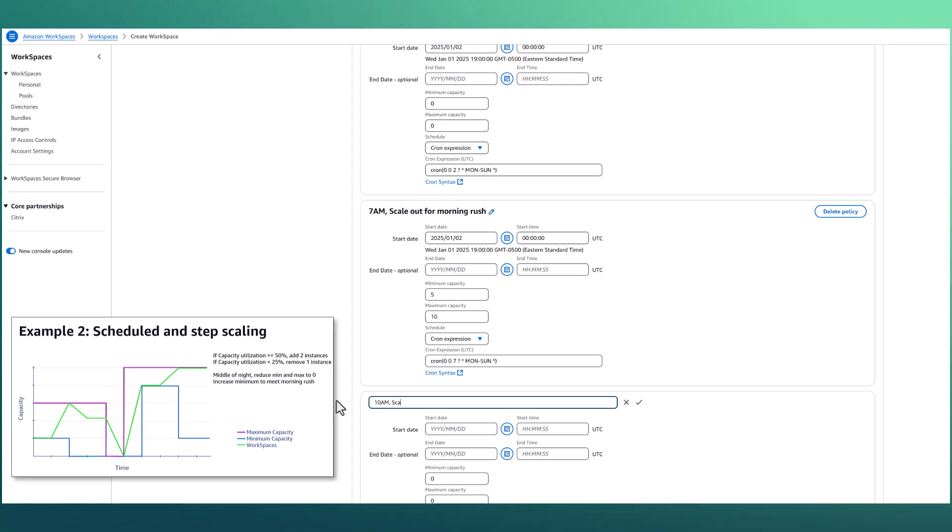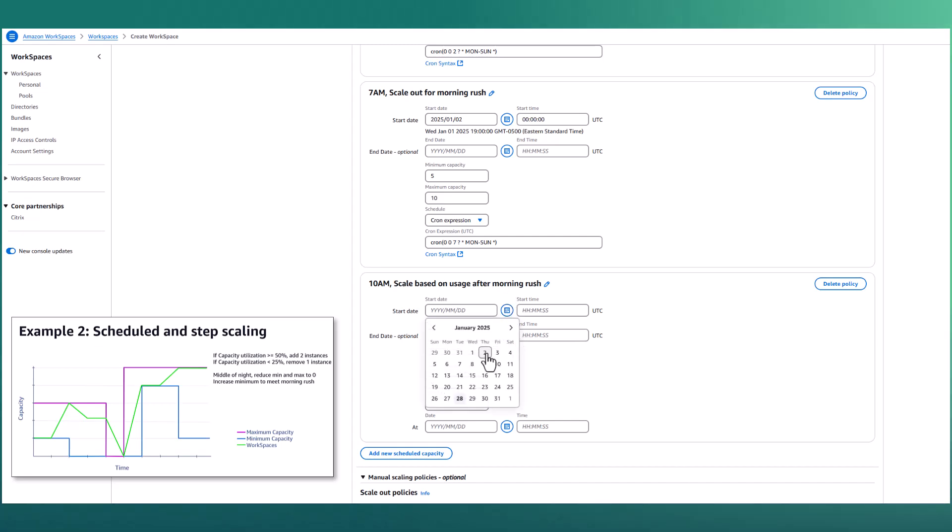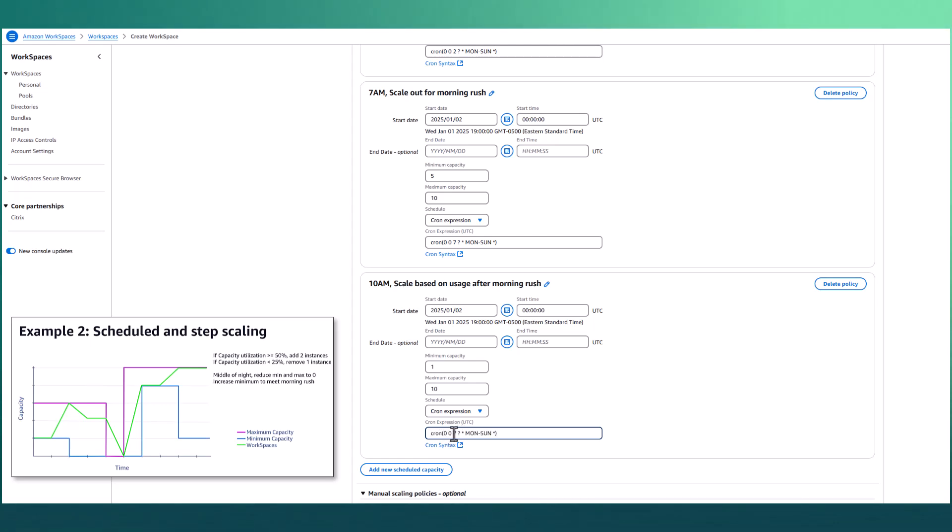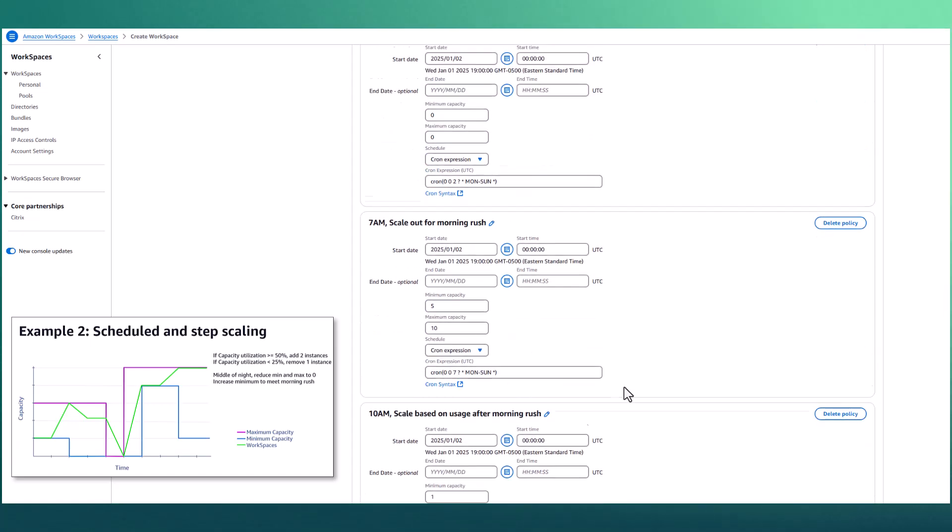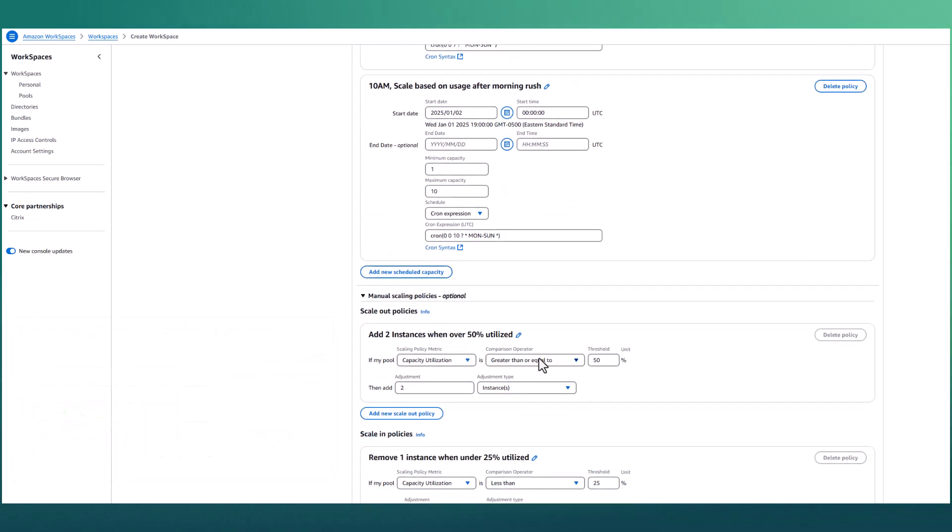We're then adding a final policy, which runs every day at 10 AM after the morning rush, which will relax that minimum capacity value and allow the pool to scale in, should there not be users on the system, thus optimizing our costs. We will keep the maximum capacity value at 10, though. So as users do come onto the system, they won't be limited by the fact that we've hit our maximum capacity. That's all it takes to set up this example policy on the pool to scale down overnight, scale out ahead of your morning rush, as well as grow and shrink to meet your actual usage throughout the day.